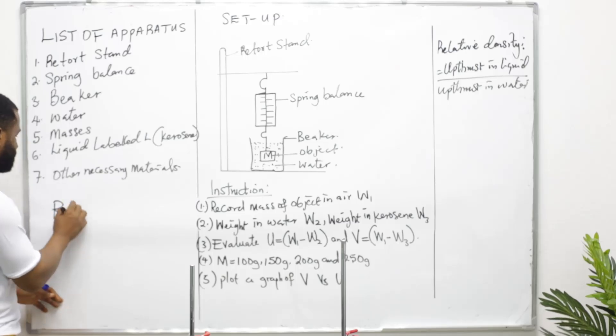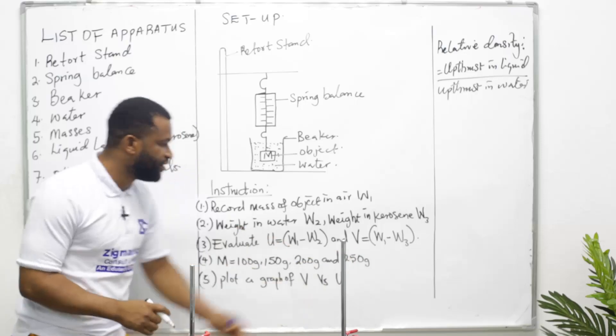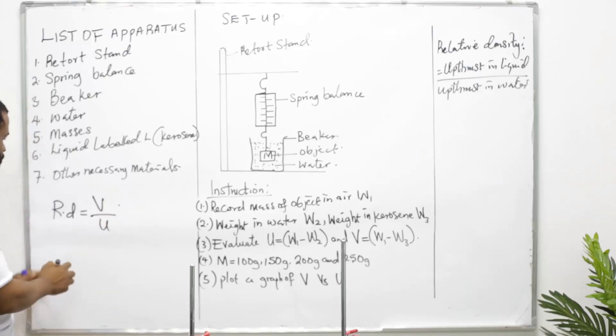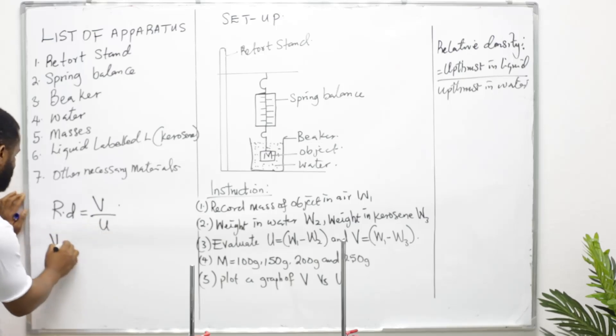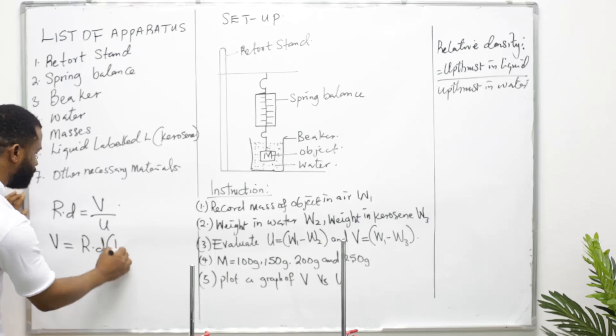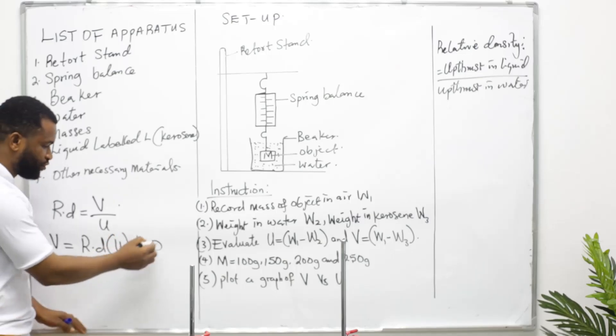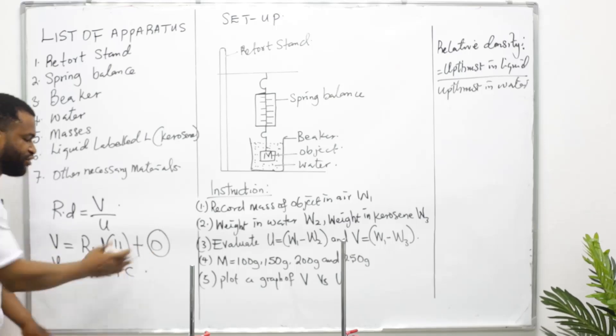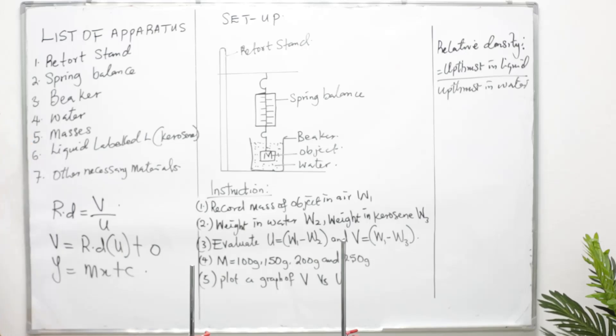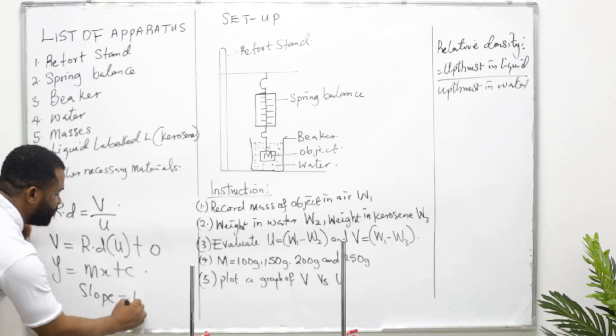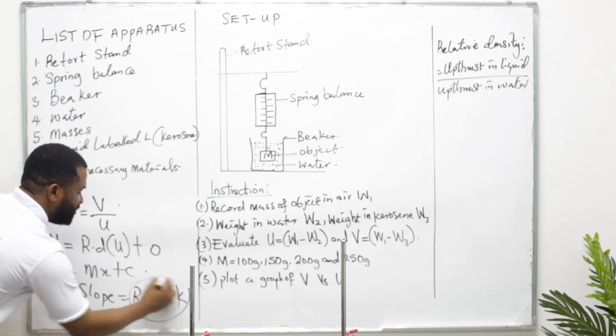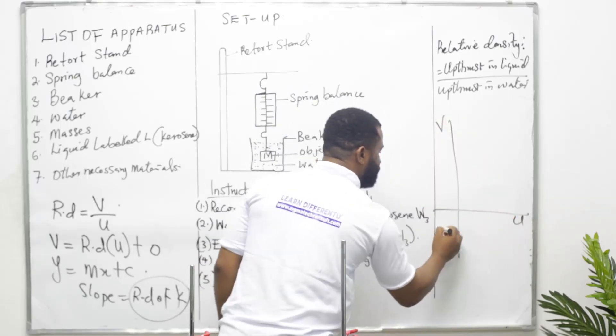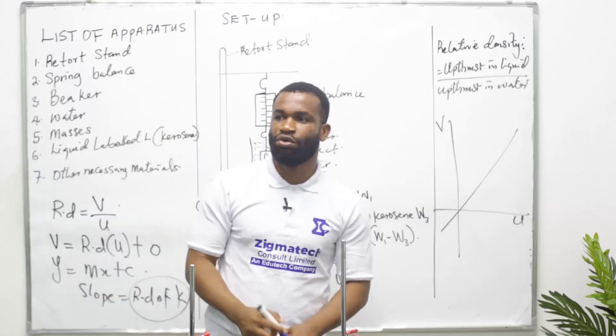If you plot the graph, this is very important. Relative density is equal to the uptrust, which is V, which is what we are plotting on the vertical axis, all over U which is what we are plotting on the horizontal. That means V equals relative density times U plus zero. That means the graph is supposed to pass through the origin because when I compare it with this equation, the constant is zero. The slope of our graph is going to be the relative density of kerosene. That is the essence of this experiment. Are you ready? We are going to the lab to carry out the experiment.